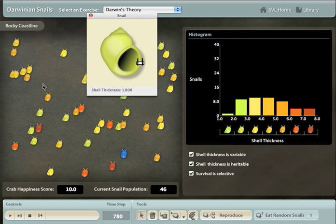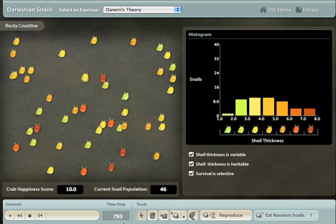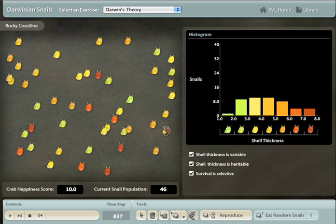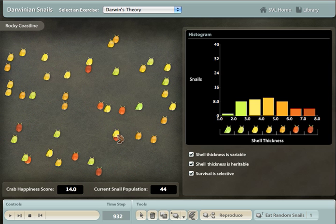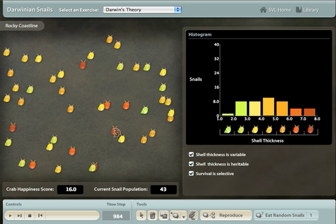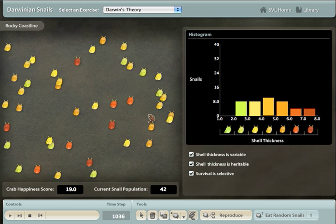In the first exercise, students are asked to eat half the snails as dinner. As with all our labs, they reach this and all other exercises by following detailed instructions in a workbook. Students quickly learn to eat the thin-shelled snails, leaving only thick-shelled snails.